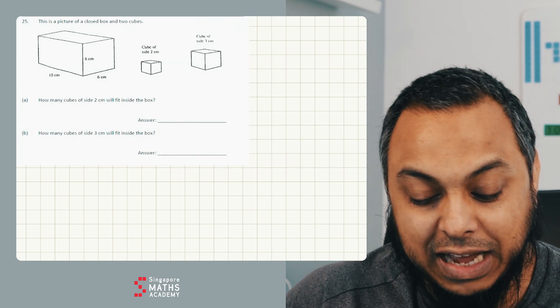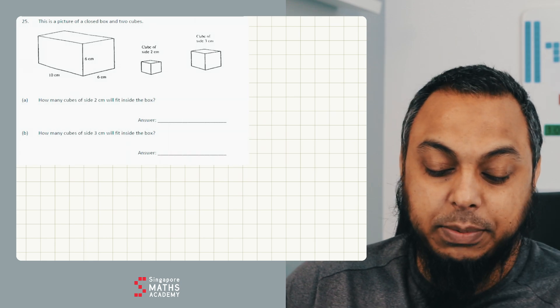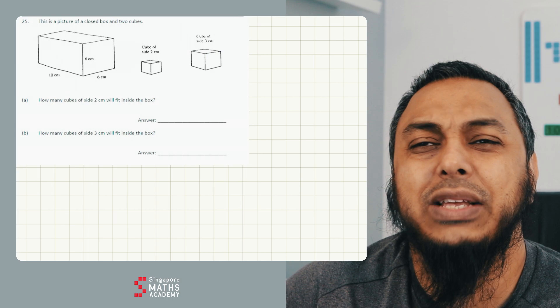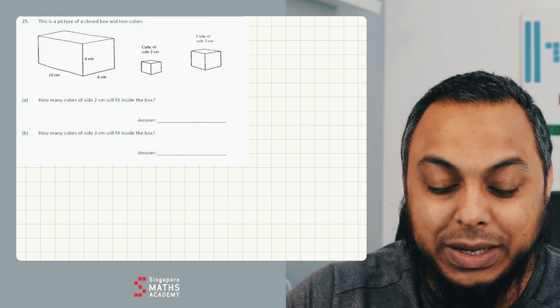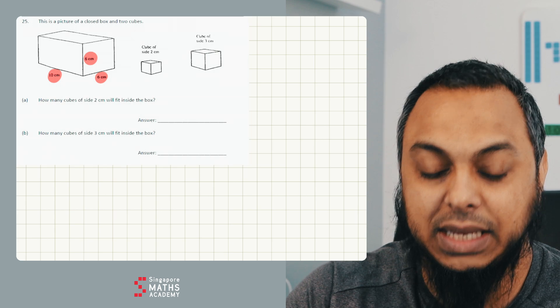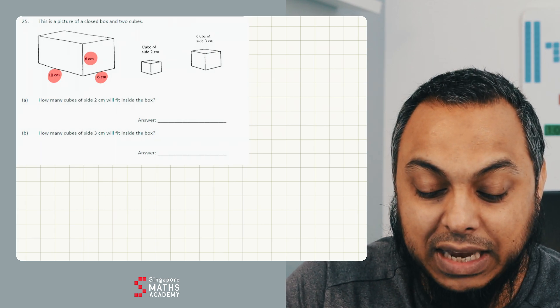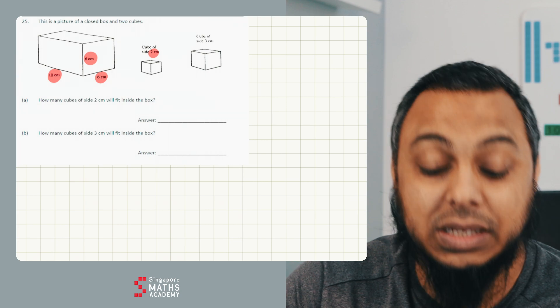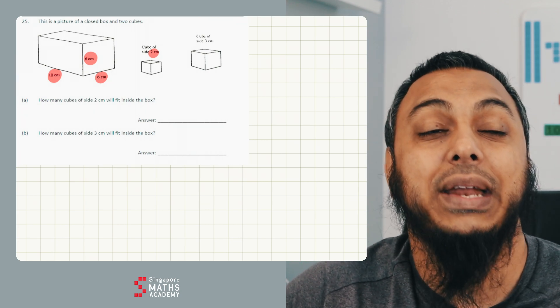And then it says how many cubes of side two centimetres will fit inside the box. So the first step is, there's two things we could do here. We could work out the volume, we could do 10 times 6 times 6, and then divide by 2 by 2 by 2. 2 times 2 is 4 times 2 is 8. We can divide the volume by 8 and figure it out that way.